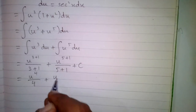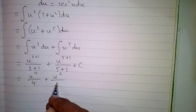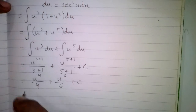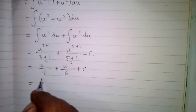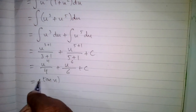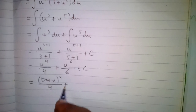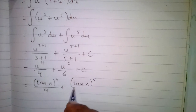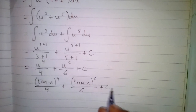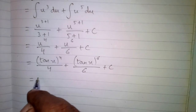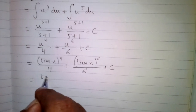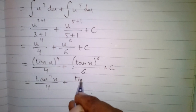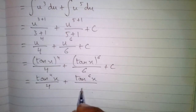After simplifying we have u⁴/4 + u⁶/6 + C. Now we will put back the value of u, which is tan x, giving us tan⁴x / 4 + tan⁶x / 6 + C.